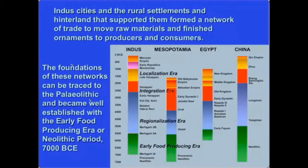These patterns of trade became solidified during what we call the early food-producing era, when people began settling down, and then continued to expand and become more elaborated over time. People have been moving across large, long distances to gain specific materials for a very long period of time.